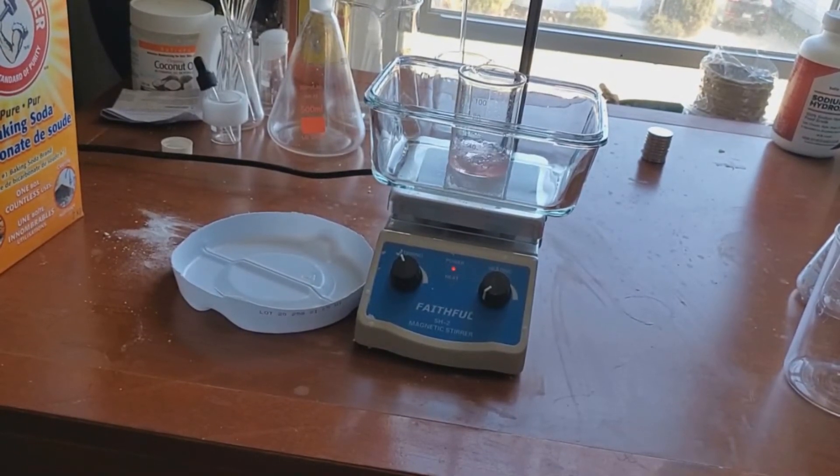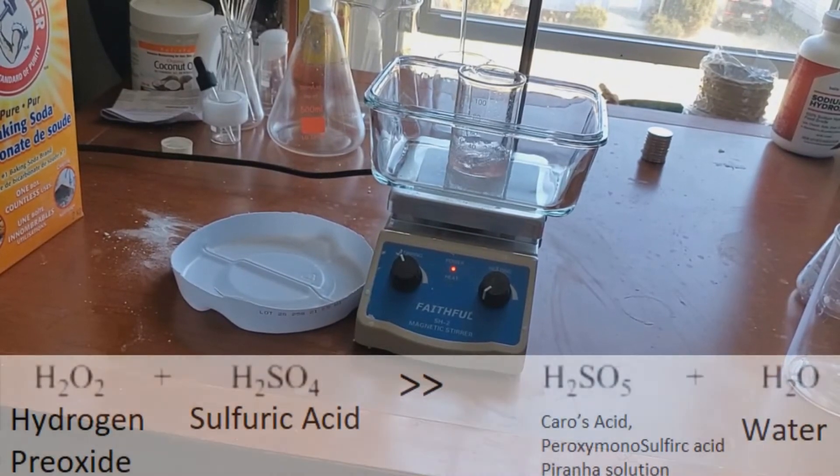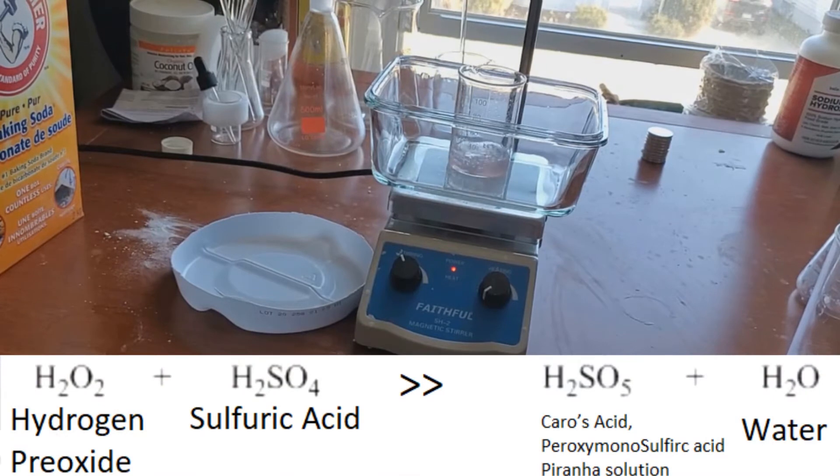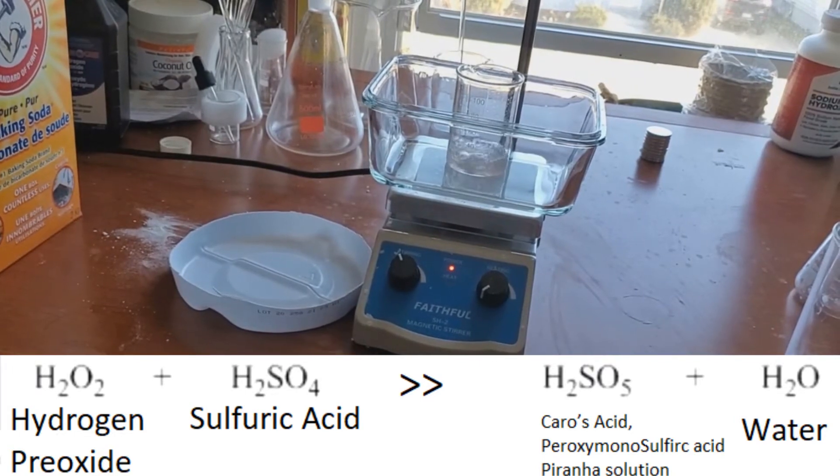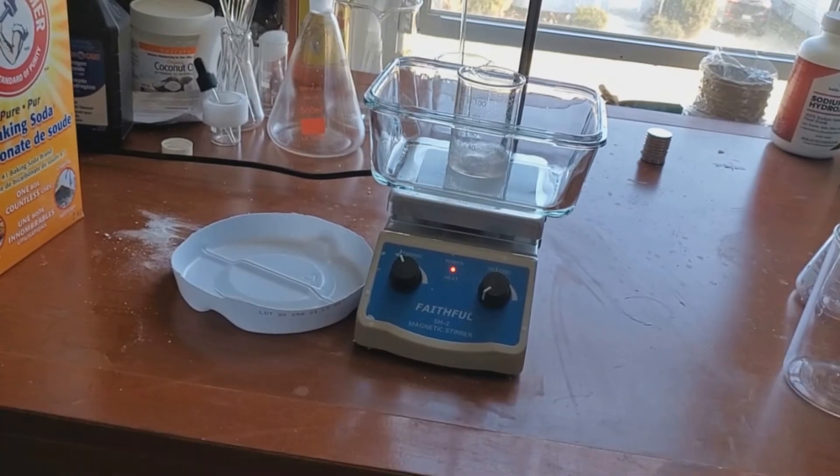So what is happening is we are making a dilute piranha solution. The sulfuric acid is reacting with the hydrogen peroxide to create something called Caro's acid and water. Caro's acid is the same as piranha solution, and the scientific name for it is peroxymono sulfuric acid. It's all the same name for the same solution.